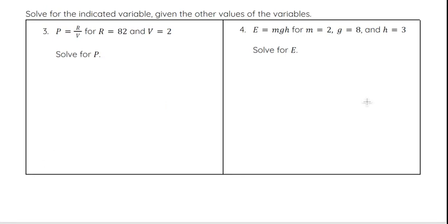Now let's try the next two, which are very similar except they're set up in an equation format and we're solving for one of the variables. Here we're solving for P and over here we're solving for E. They give us the variable values as well. So P equals R over V. R is 82 and V is 2. We can set this up by plugging in 82 for R, which is 82 on top, over 2 for V.